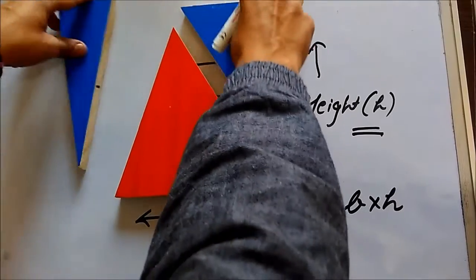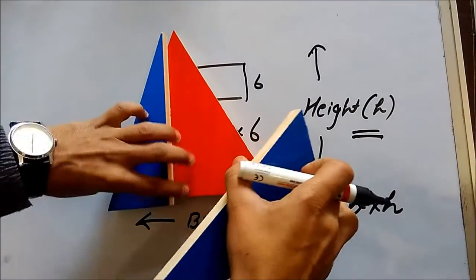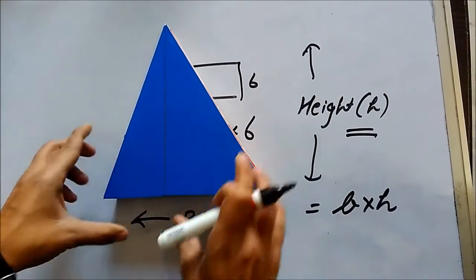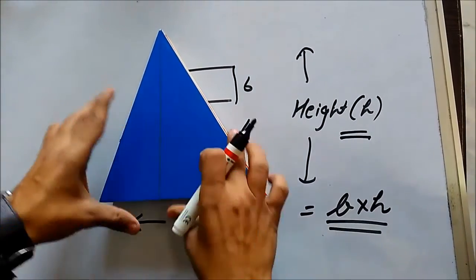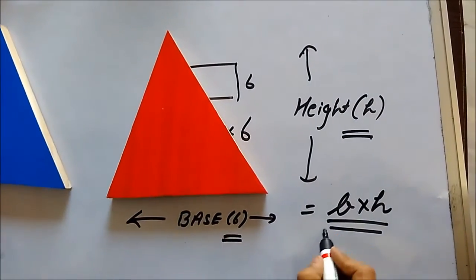But now what we need to find is the area of a single triangle, and this figure was made up of two triangles. So since B into H is the area of the blue plus red triangles, we will simply divide it by two.